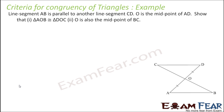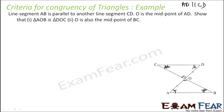Let's take some examples. Line segment AB is parallel to line CD — these two are parallel — which means this angle is equal to this angle. O is the midpoint of AD, and the vertically opposite angles at O will also be equal to each other.